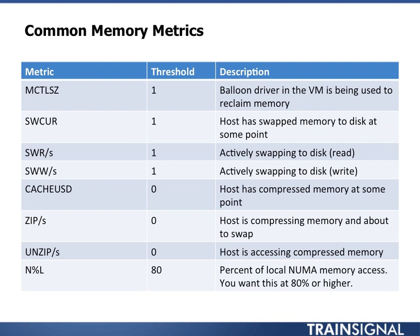Now, some common memory metrics. First is Memory Control SZ — the balloon driver in the VM is being used to reclaim memory. If you see this one or higher, ballooning is going on and your memory is being constrained. Some ballooning is fine, but if it's a chronic issue or causing performance problems, it gives you a place to investigate memory.